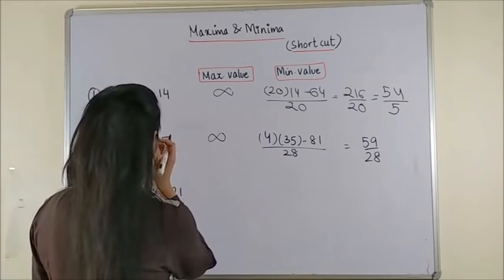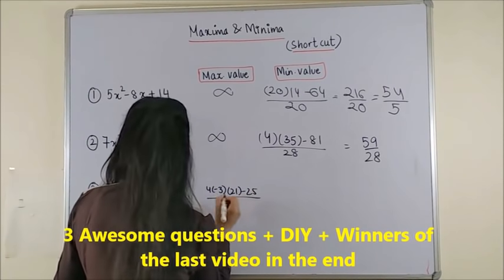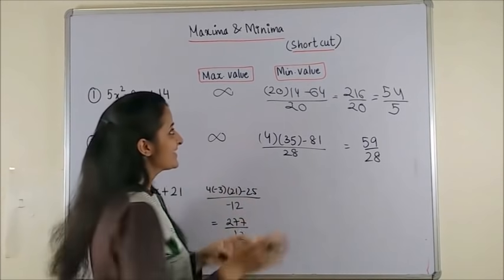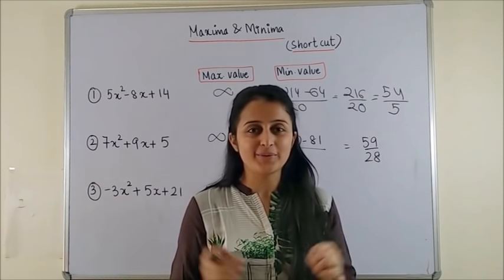And the last one. Maximum value would be... That's it. And the minimum value is minus infinity. Wasn't that quick?